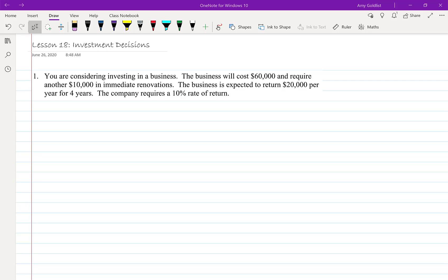Today we're going to start our final chapter, Chapter 6, and we'll start with Lesson 18: Investment Decisions. We're going to jump right into a problem. You are considering investing in a business. The business will cost $60,000 and require another $10,000 in immediate renovations. The business is expected to return $20,000 per year for four years. The company requires a 10% rate of return.